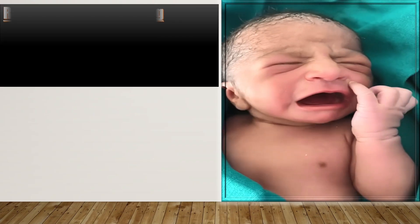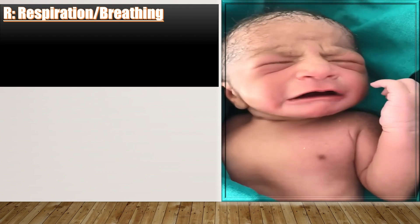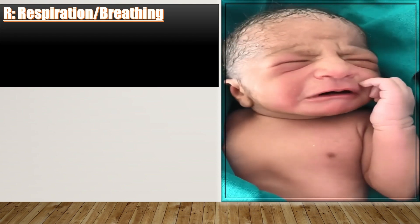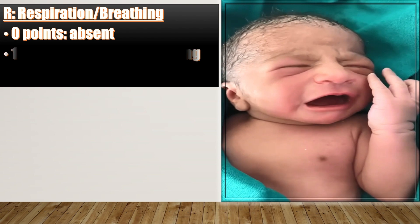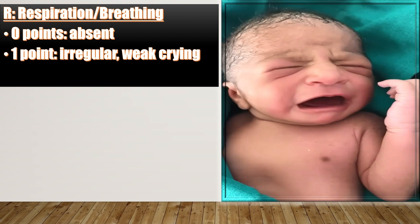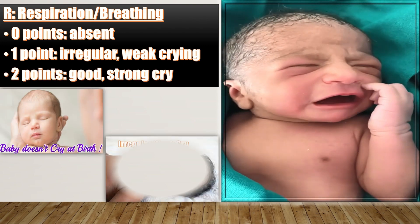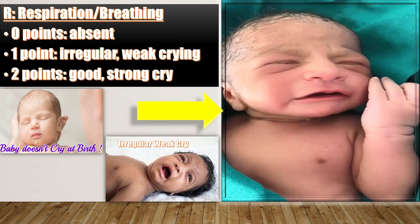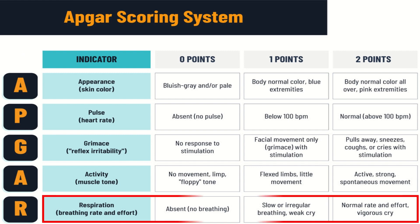The last letter in APGAR scoring system is R, which stands for respiration or breathing. When respiration or breathing is absent, 0 points are given. 1 point is given when the respiration is irregular or there is weak crying of the baby. 2 points are given when there is a good or strong cry of the baby. In the APGAR scoring system chart, the last letter R is for respiration — breathing rate and effort.